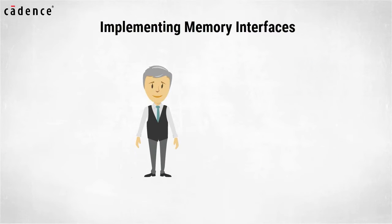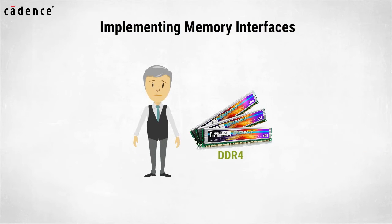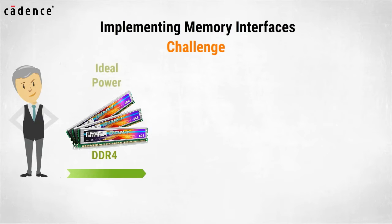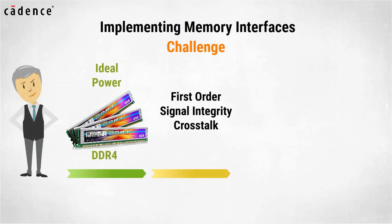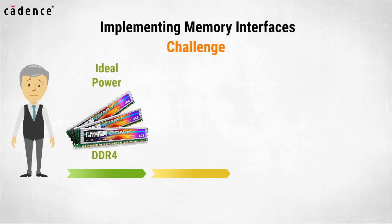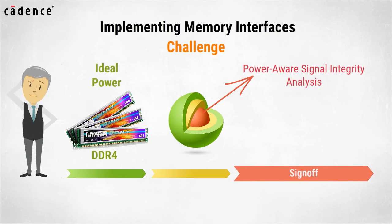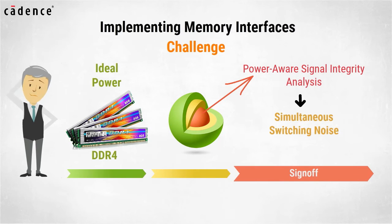Successfully implementing memory interfaces such as DDR4 is one of the most challenging tasks faced by SI engineers. Early in the design process, memory interfaces are typically analyzed using ideal power so that first-order signal integrity and crosstalk problems can be assessed and corrected. However, significant challenges are faced by SI engineers during the sign-off stage when power-aware signal integrity analysis is performed to assess the effect of simultaneous switching noise, or SSN.